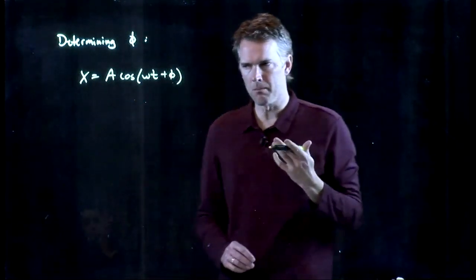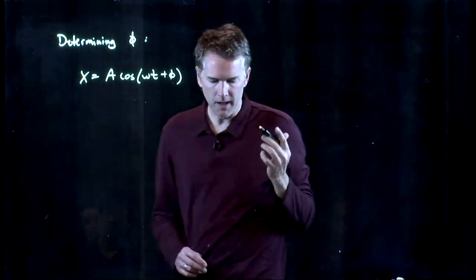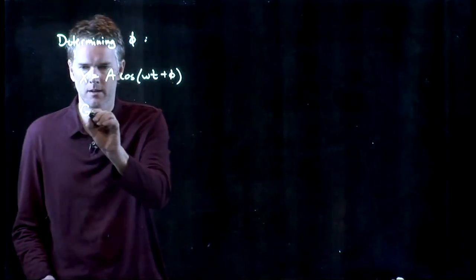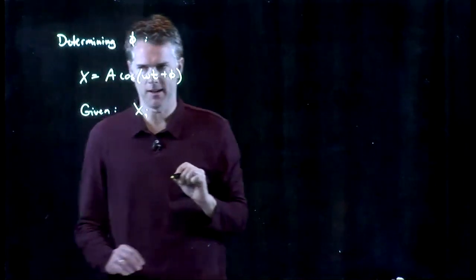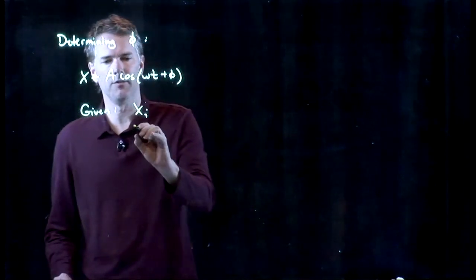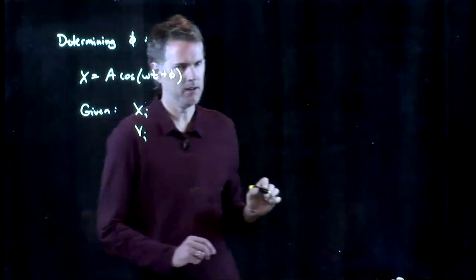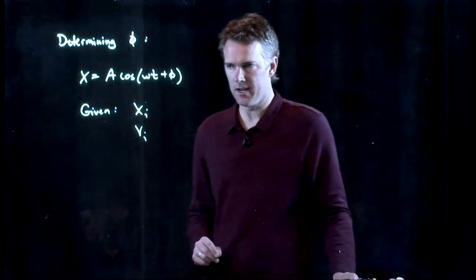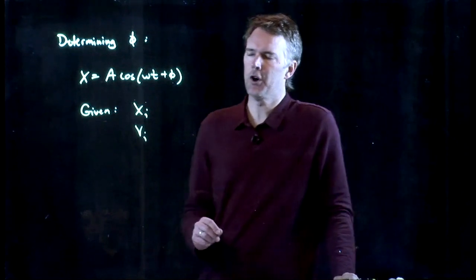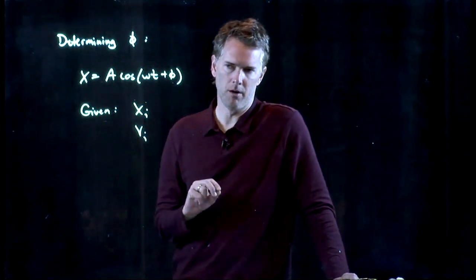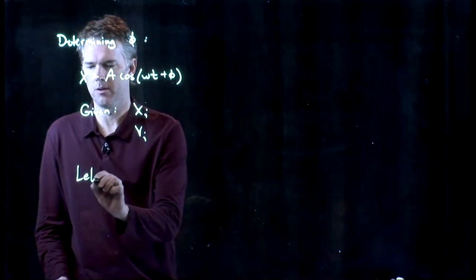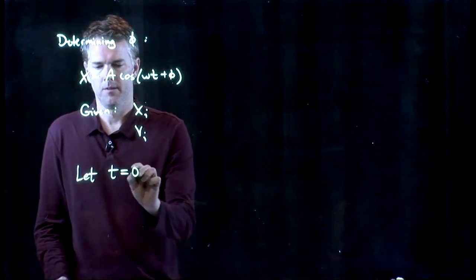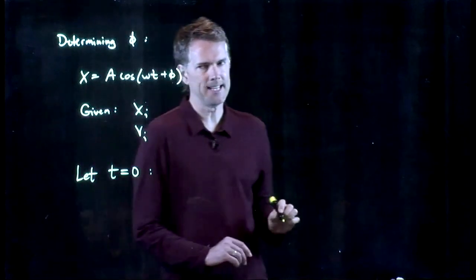And let's say that you know something about the starting parameters. Let's say that you are given the starting position, xi, and you're also given the starting speed or velocity, vi. How can we determine phi from those? Well, the way we do it is the following. Starting conditions means that t equals zero.